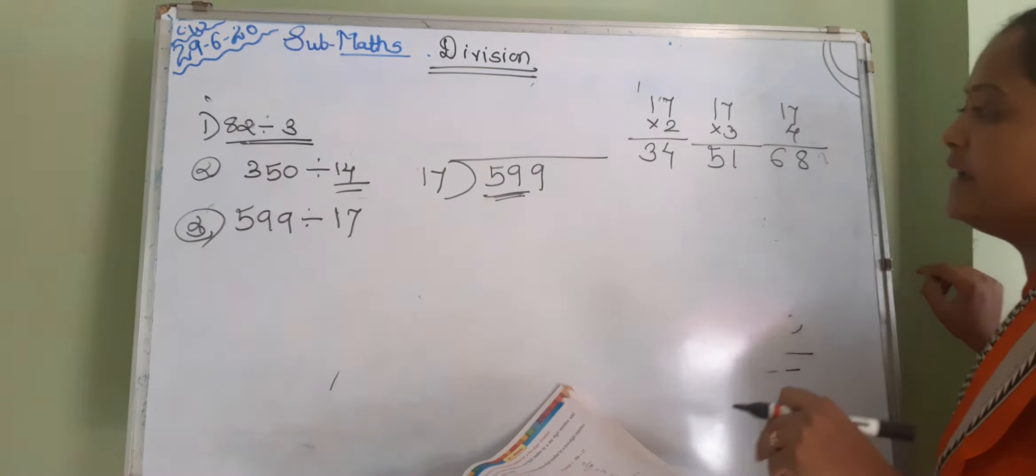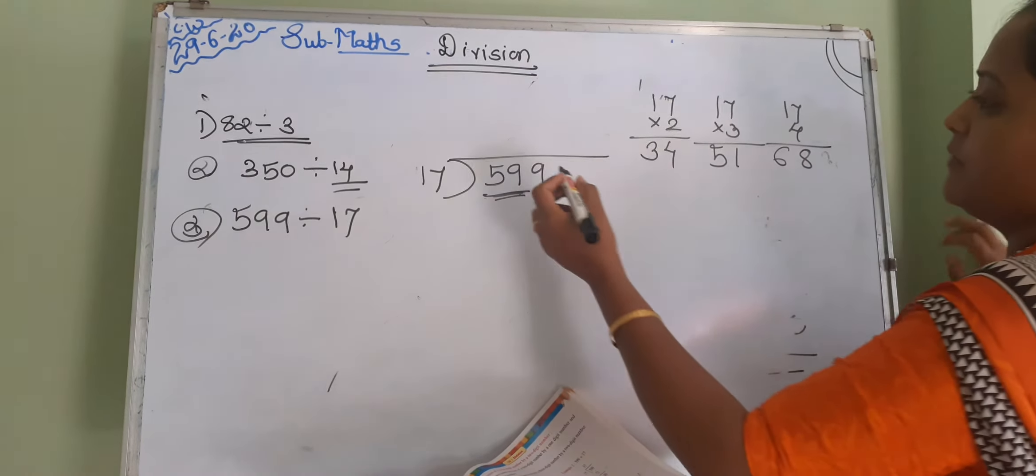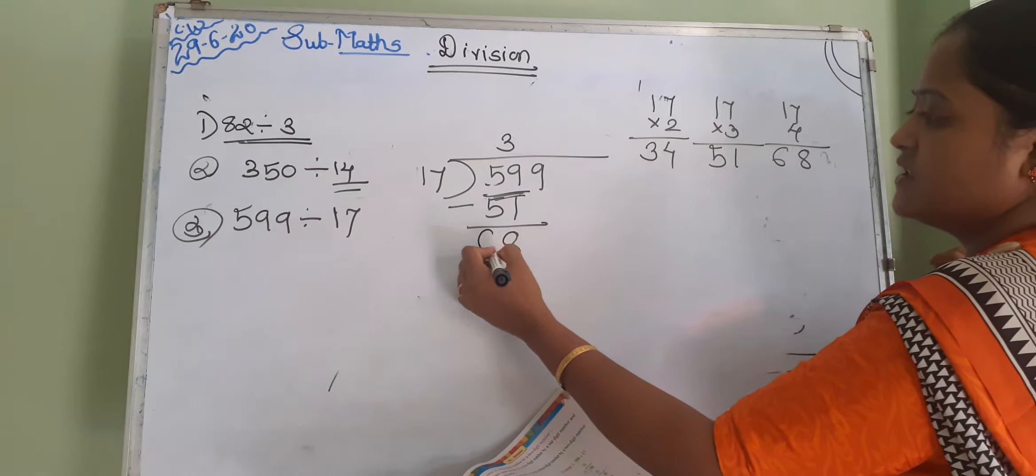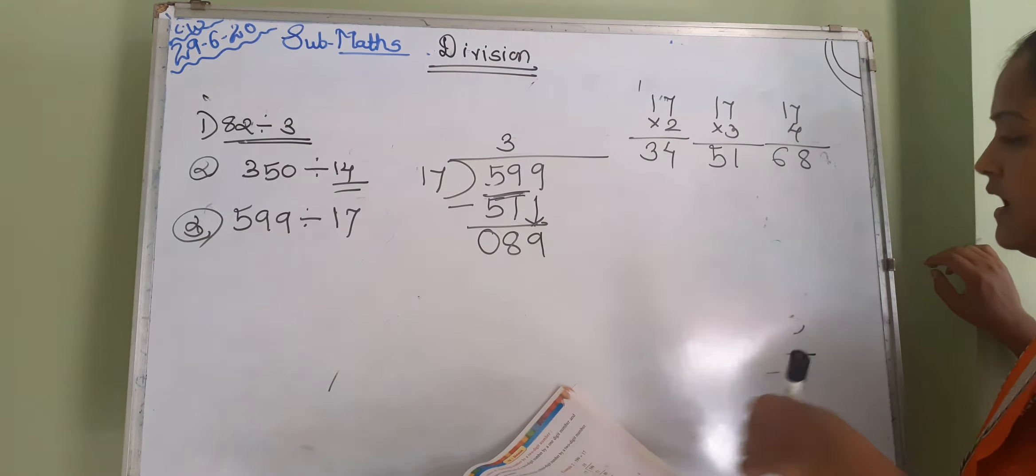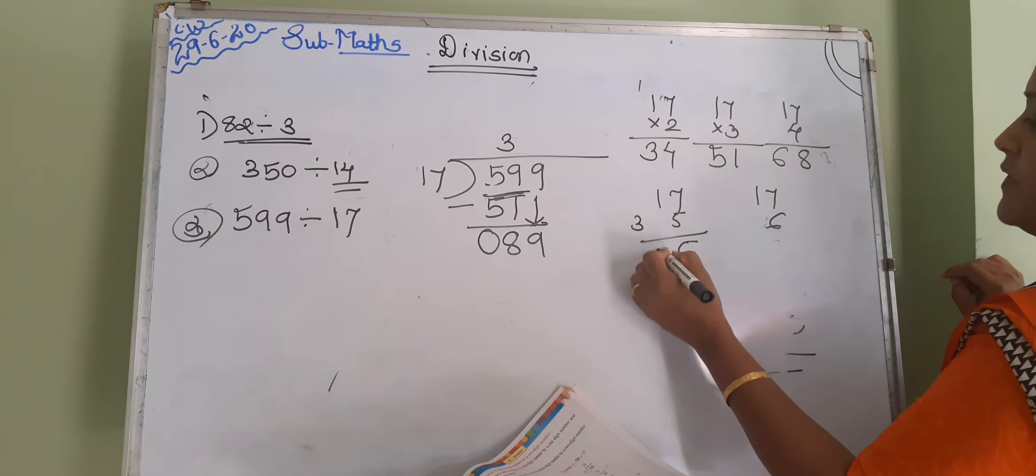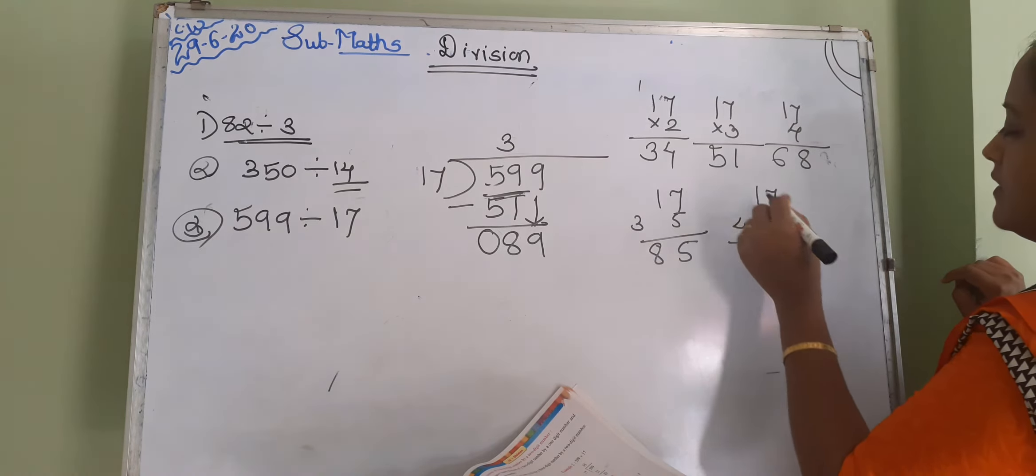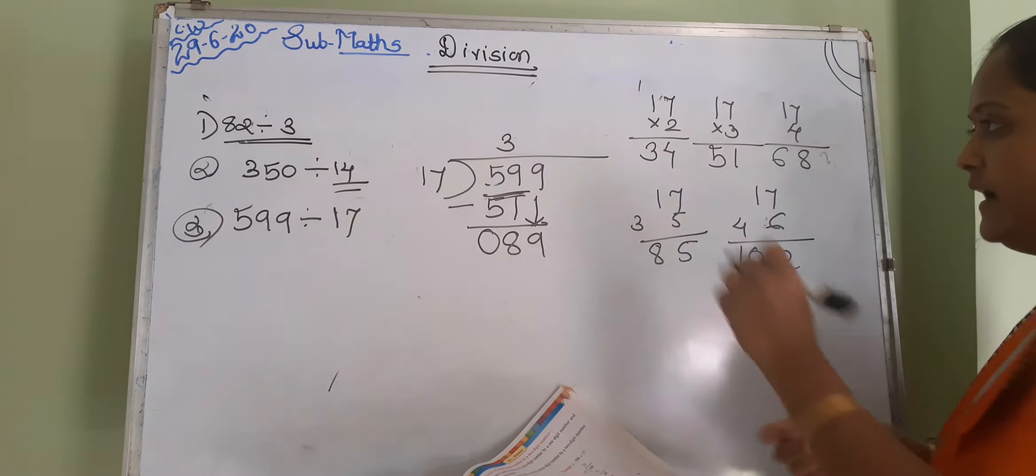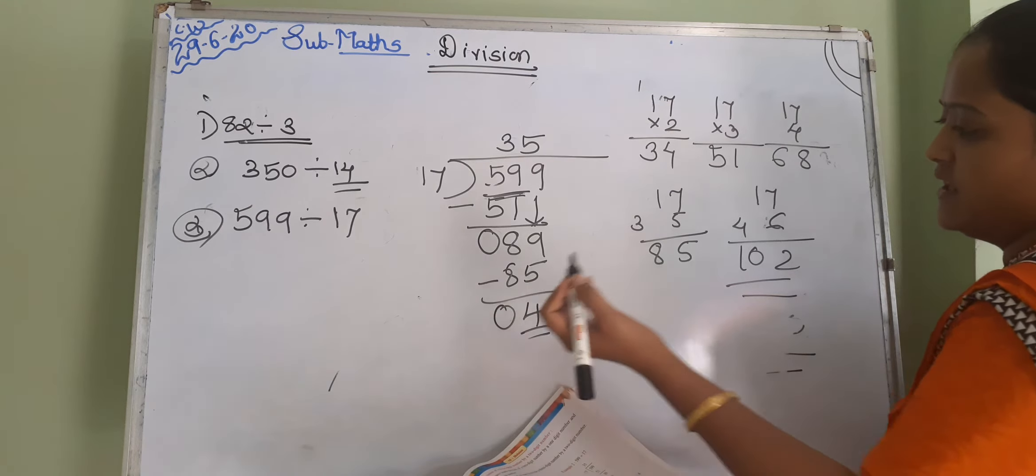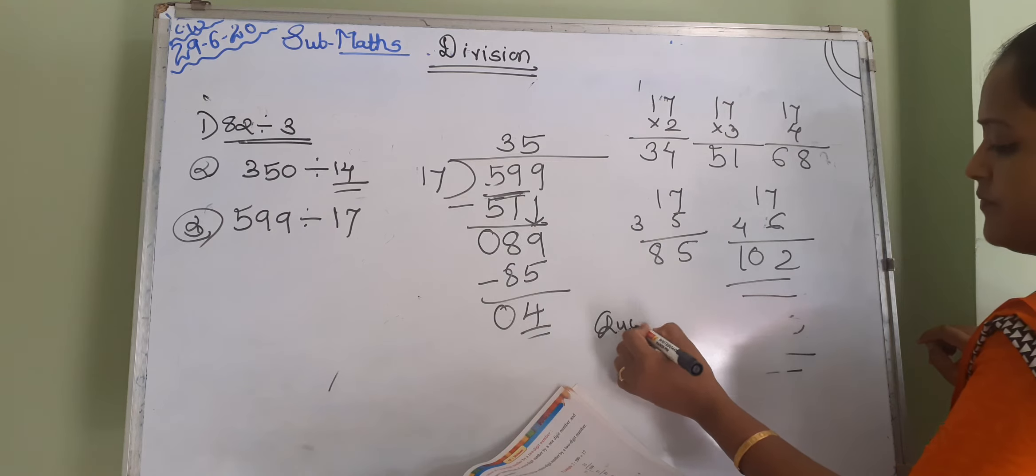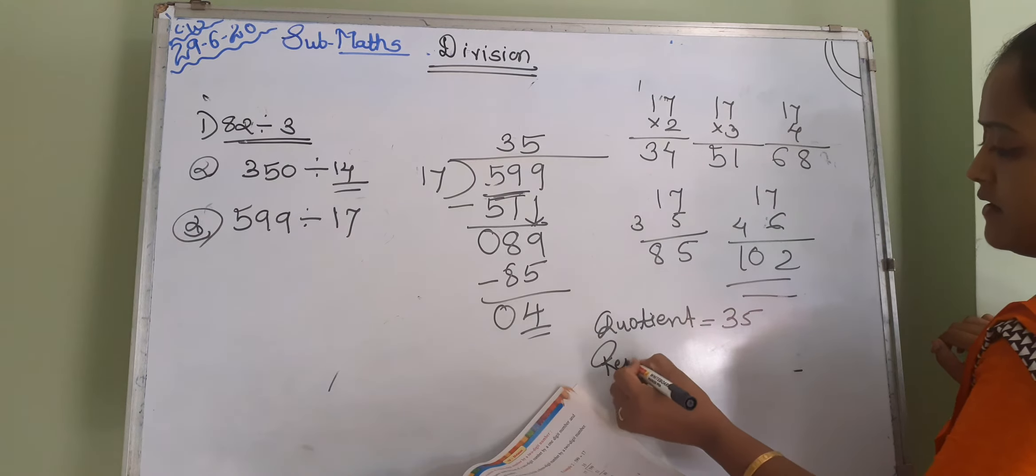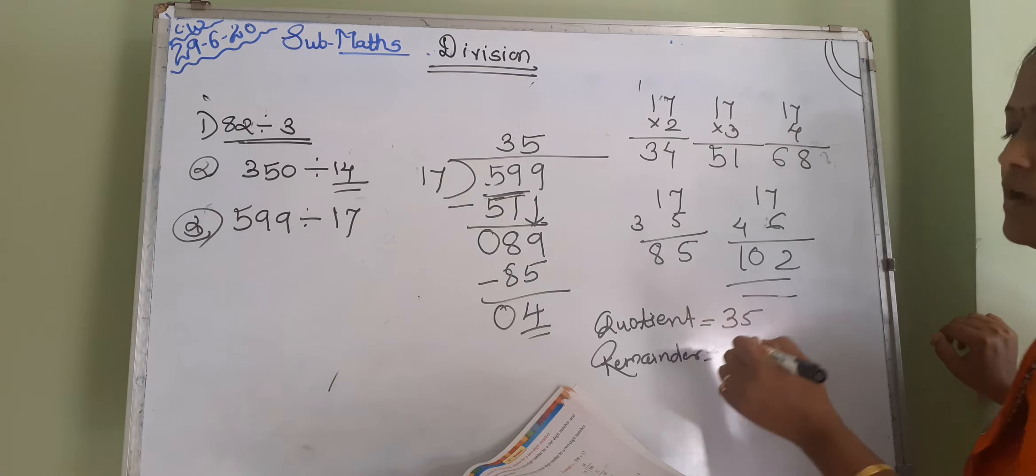Here आपका first one number is 59. 17 threes are 51. 9 minus 1 is 8, 5 minus 5 is 0, then 89. Again, अगर आपका multiply करके देखेंगे, 17 fives are, 17 sixes are 85 and it's 102. So it's nearby 85. So 17 fives are 85. 9 minus 5 is 4, 8 minus 8 is 0. So quotient of that sum is 35 and remainder is 4.